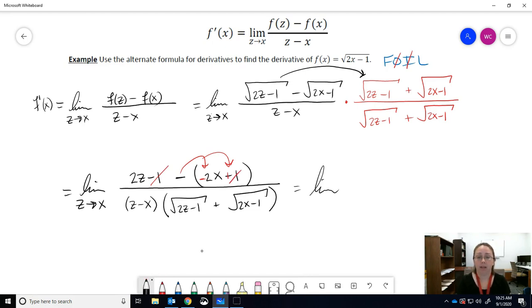Well, that means the 1s are going to cancel. So let's write what's left. Limit as Z approaches X, we have 2Z minus 2X on top over Z minus X. Ooh, I see something useful there, maybe. Might do a little bit of work. 2Z minus 1 plus the square root of 2X minus 1.